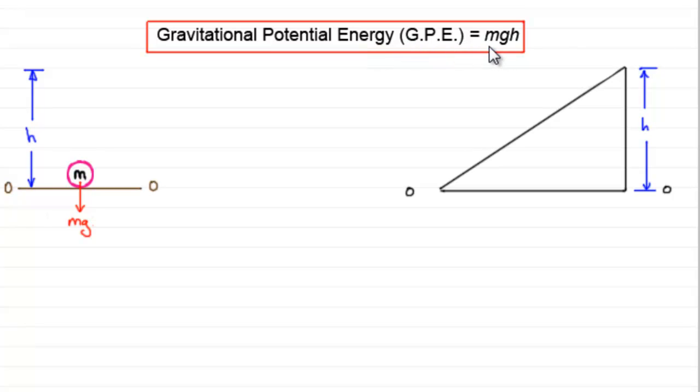It's given by this formula here, MGH. MG being the weight of a particle, and H, the height that a particle moves. You could think of it as work done against gravity. The weight, MG, times the distance it moves, H. Force times distance.